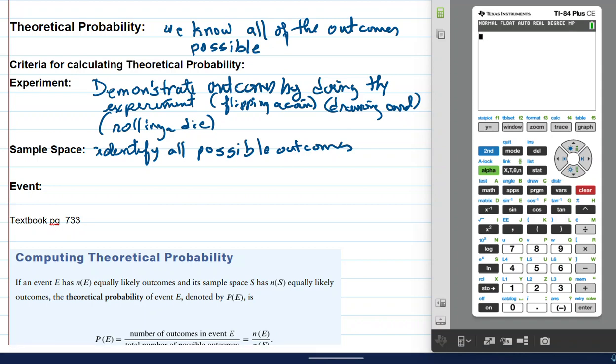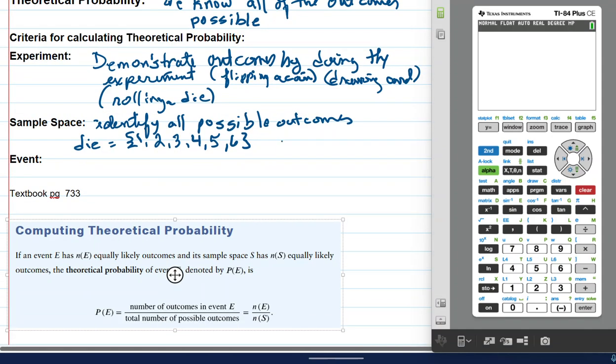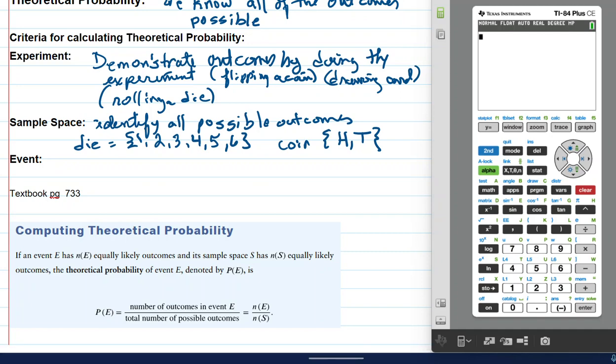So, the criteria for calculating theoretical probability means that we can have an experiment. The goal is to demonstrate outcomes by doing the experiment. And that means carrying out whatever it is. Flipping a coin or drawing a card. So, now that we have this structure of what an experiment can be, we can identify all possible outcomes. This is critical that you can state it. In other words, if we roll a six-sided die, one, two, three, four, five or six possible. That's it. That's all we're going to have. Or if we flip a coin, we know we're going to have either a head or a tail.